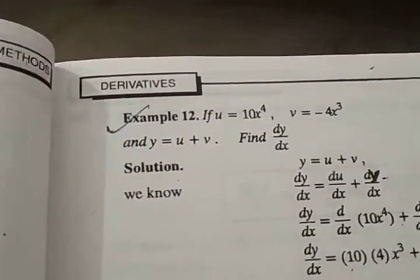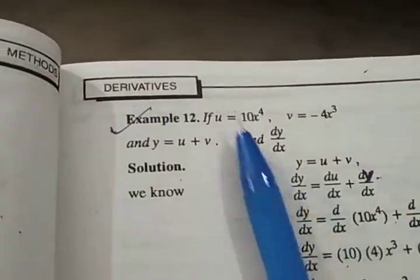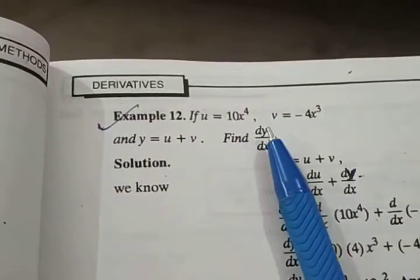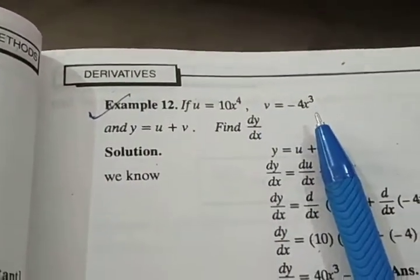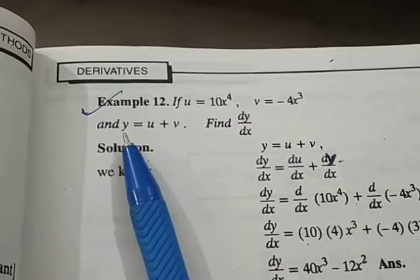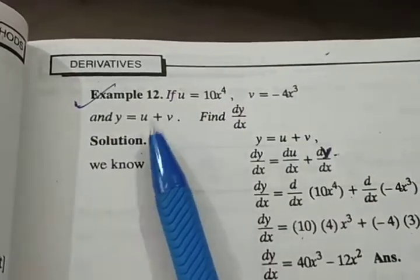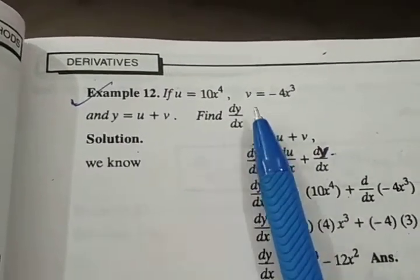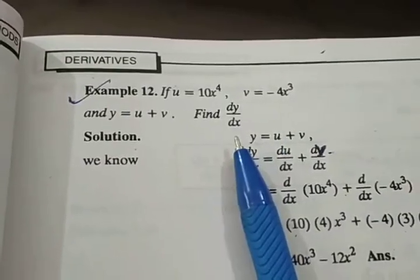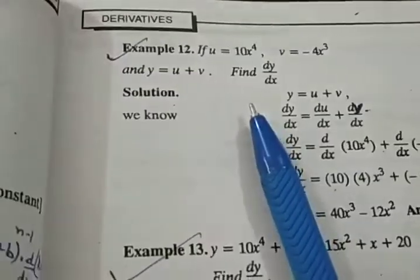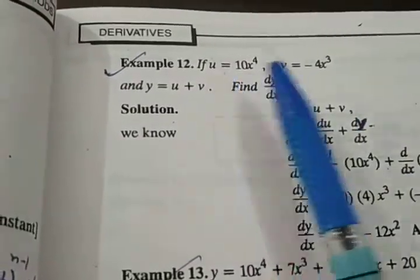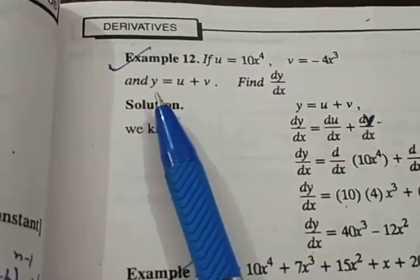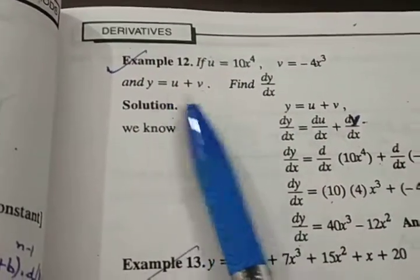Let's take this example: you are given u equals some function and v equals another function, and y equals u plus v. Then find dy/dx. So you have two functions u and v, and y is the addition of u plus v.